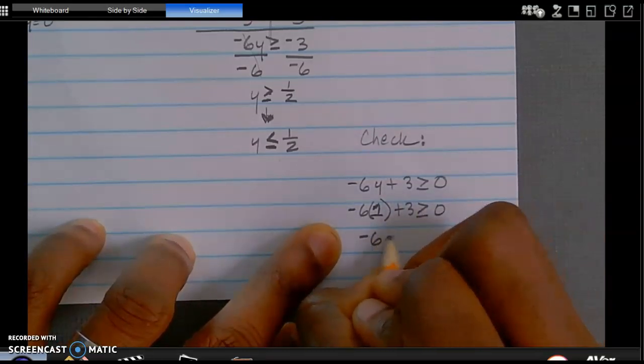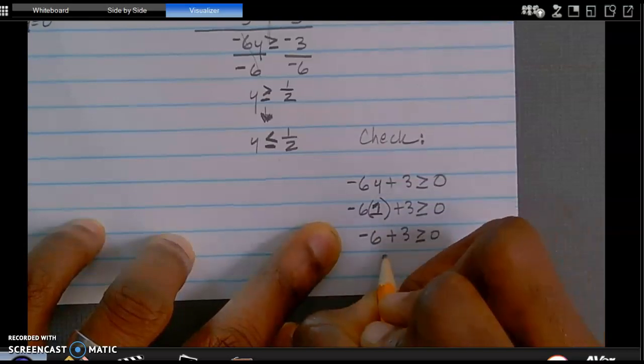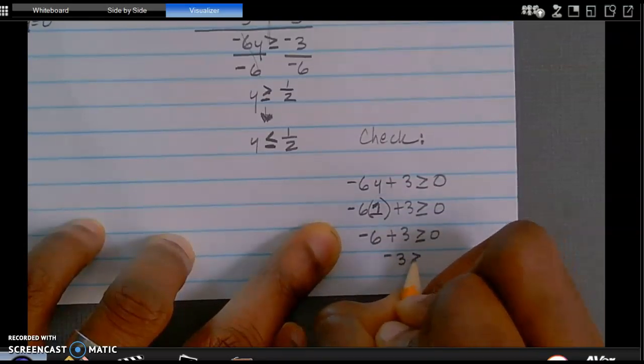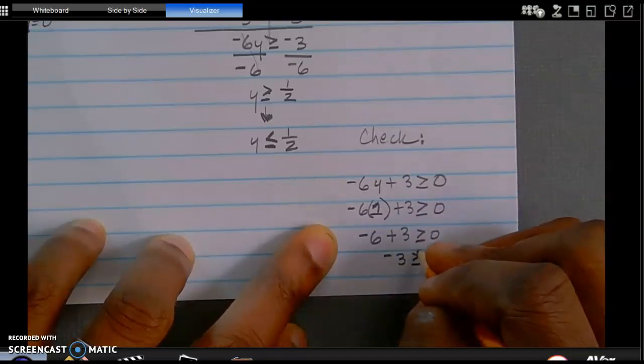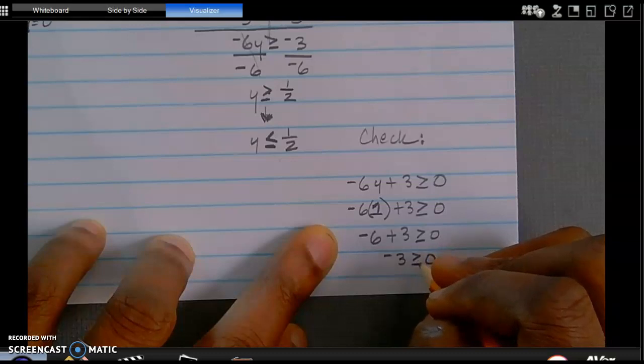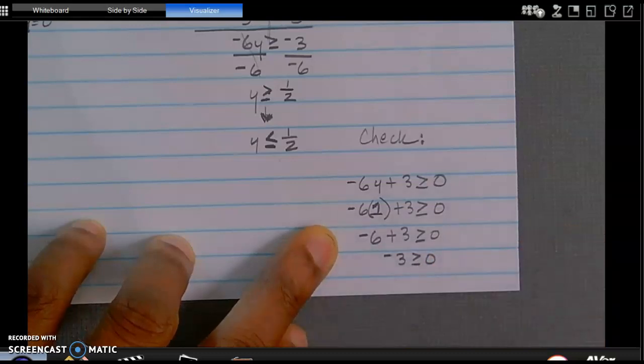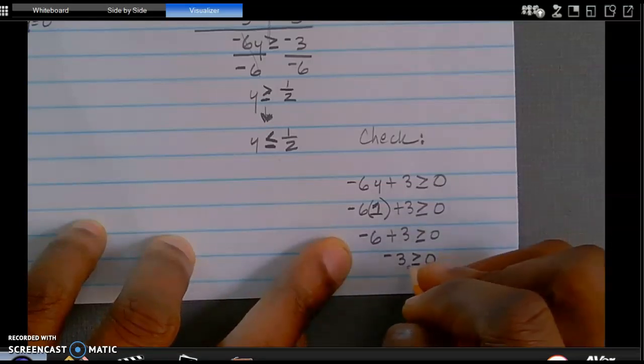This is negative 6 plus 3 is greater than or equal to 0. Negative 3 is greater than or equal to 0. Is that statement true? Negative 3 is not greater than 0, because negative 3 is to the left of the 0. So if that is to the left of the 0, we know that is not greater than.